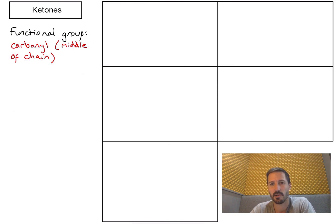That's slightly different to an aldehyde where my carbonyl functional group is at the end of a chain. So what do we need to know about naming ketones? Well, the suffix or the end part of the name is going to be -anone.